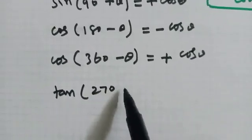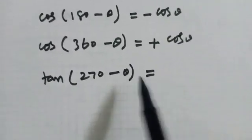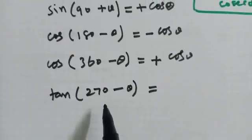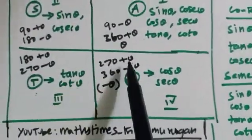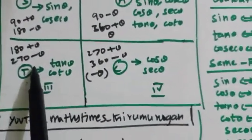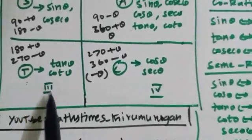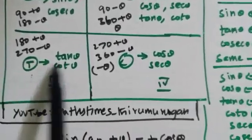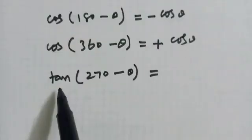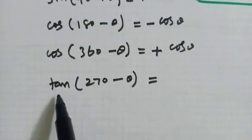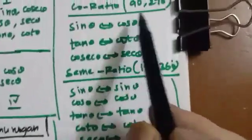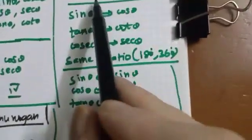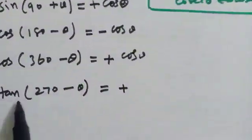270 minus theta is the third quadrant. The third quadrant is plus. The same ratio is tan. The same ratio applies at 270 degrees, and the same ratio is tan.